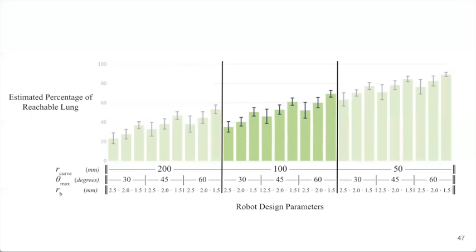On the other hand, we can start to see other trends as well. If we consider this design that has an ultra-thin bronchoscope, we can see that we can improve reachability by exchanging that ultra-thin bronchoscope for thicker bronchoscopes, pointed to by the orange arrows, if we're able to increase the exit angle capabilities.